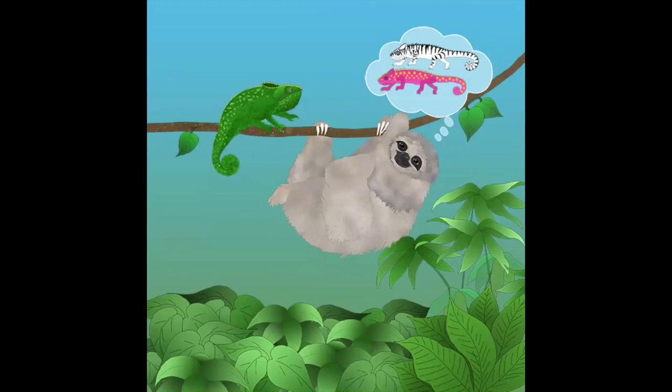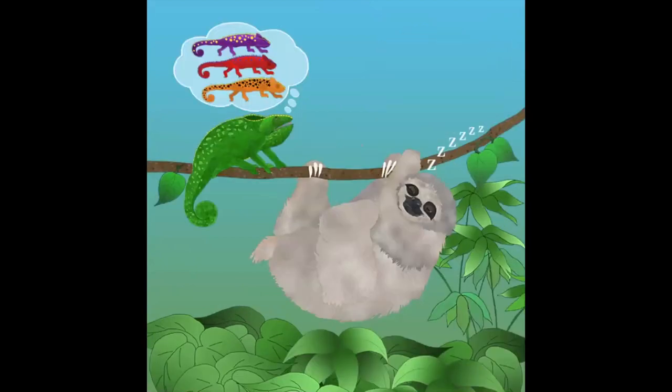Oh, I wish I could, said Chameleon. I would love to be pink or purple or red or orange. But I'm green, from the tip of my nose to the end of my tail. I'm just green, green, green. Sloth went back to sleep and soon he started to snore. Oh, that's very boring, he said.